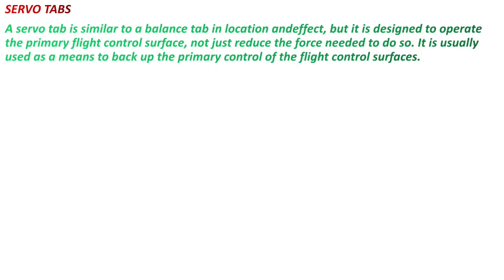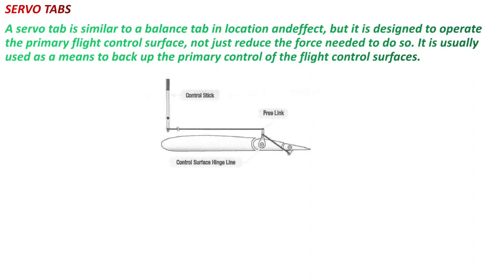Servo tab is similar to balance tab — it also moves in the opposite direction to move the control surface and to assist the pilot. But it also serves as a backup for primary control surfaces. There is a linkage between the servo tab and the control stick. If there is a hydraulic pressure loss or electrical loss, the pilot can move the tab from the control stick, and by moving the tab, the control surface moves to the desired position and the aircraft can be controlled.